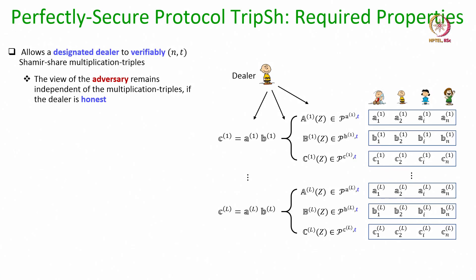Just to recap what exactly we want from the triple sharing protocol TripSh: it is a special type of VSS protocol where there will be a designated dealer whose inputs will be multiplication triples. We want the dealer to secret share L number of multiplication triplets, where L is some parameter, and we want the privacy and commitment properties. The privacy property demands that if the dealer is honest then the view of the adversary should be independent of the secret shared multiplication triples. The adversary will get T shares for each of the triples, but the exact value of those multiplication triples should be unknown to the adversary.